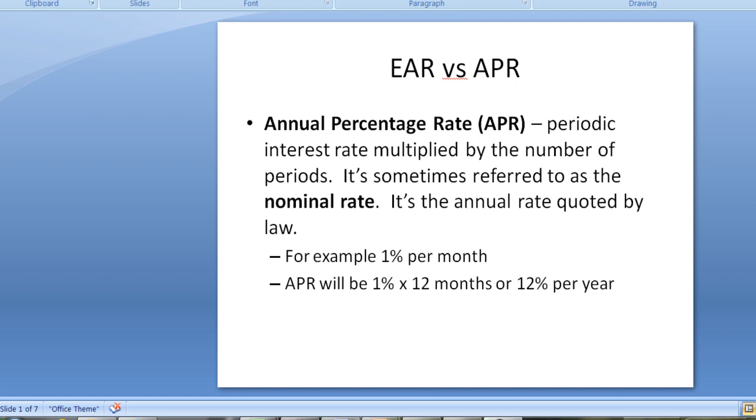There are a couple of different ways that interest rates are stated. First is the annual percentage rate, or APR. Now this is the periodic interest rate multiplied by the number of periods. It's sometimes referred to as the nominal rate, and it's the annual rate that's quoted by law.